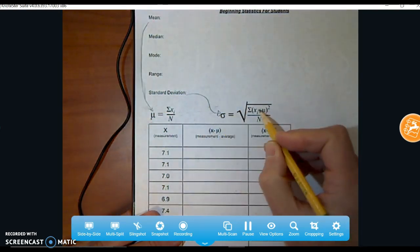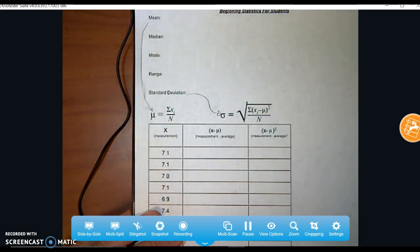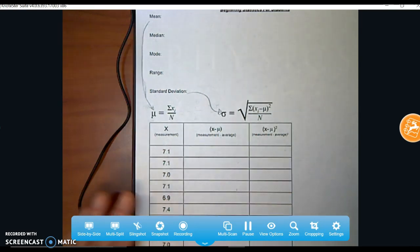And then this one is the Greek letter sigma. It's a little bit complex. There's a square root and some squaring, but we'll break that down. That's the standard deviation. So we're going to learn how to do those things in this unit.